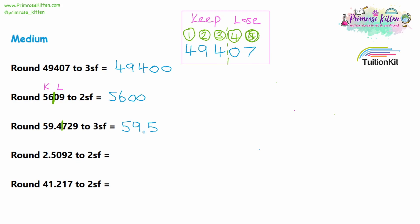For question four, we're rounding to two significant figures. Rule off after the second digit reading from left to right. The two and the point five are the first two significant figures. The first number we're losing is a zero, so we are not rounding up. We keep 2.5 as our answer.